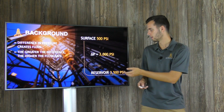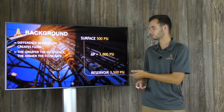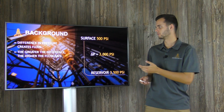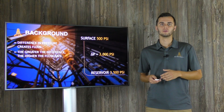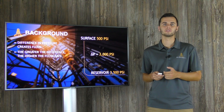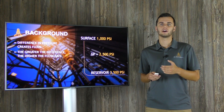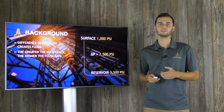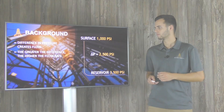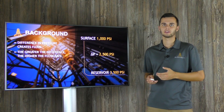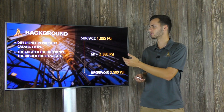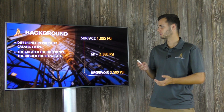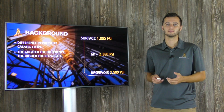The larger the difference, the greater the amount of production. As you can see from this well, the reservoir pressure is around 3500 psi and on surface at the wellhead our pressure is 500 psi, so our delta P — our difference in pressure — is 3000 psi. When the well is relatively new, operators typically keep the well choked back. This is done with a mechanical restriction in the flow line at the surface, which creates a higher surface pressure — for example, up to 1000 psi — bringing the delta P down to 2500 psi, thus decreasing the amount of production.